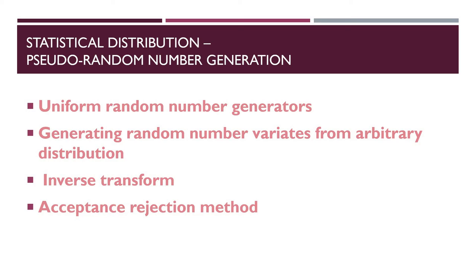The inverse transform method: we want to generate a random variable X that has a continuous and strictly increasing distribution function F, where 0 < F(x) < 1 whenever x₁ < x₂ implies F(x₁) < F(x₂). Let F⁻¹ denote the inverse of F. The algorithm is: Step 1 — generate U from Uniform(0,1); Step 2 — return X = F⁻¹(U). You can see the diagram in your textbook.